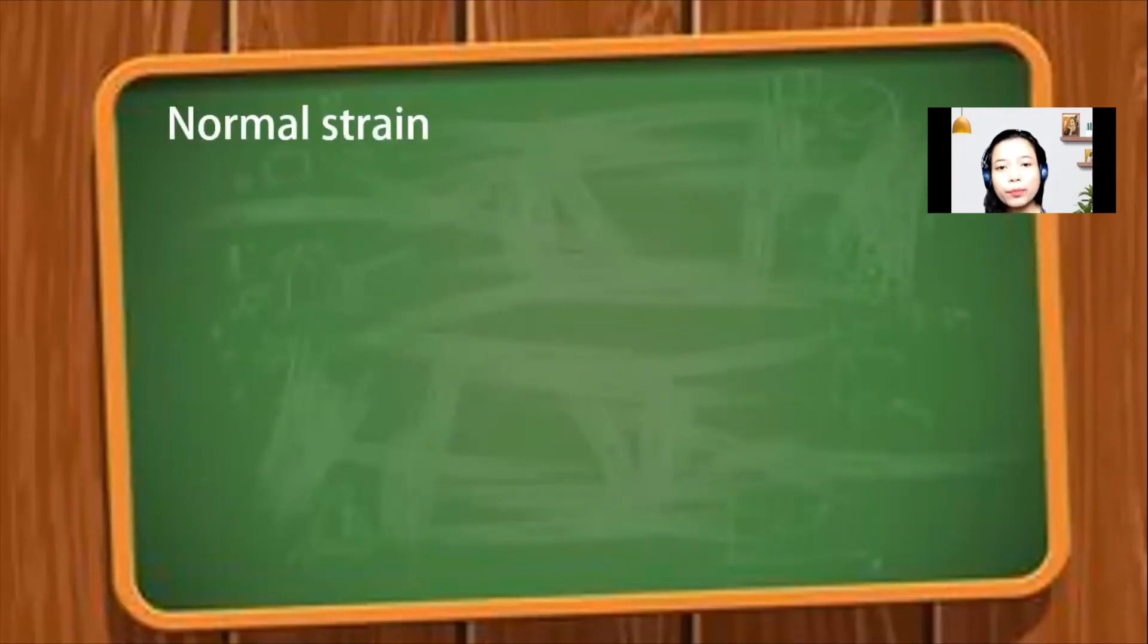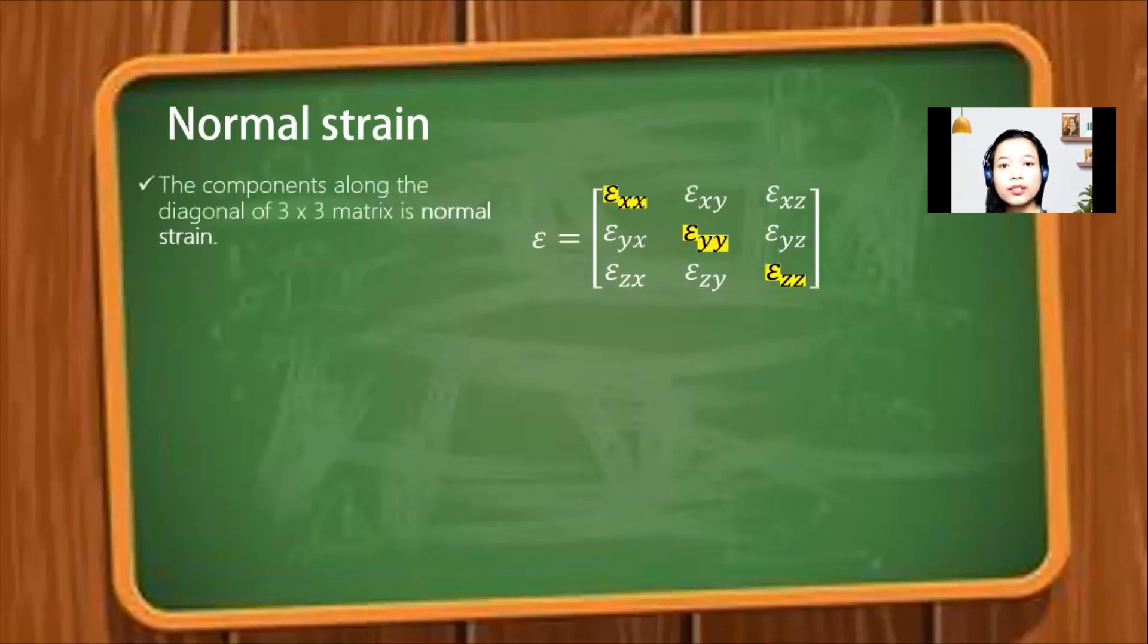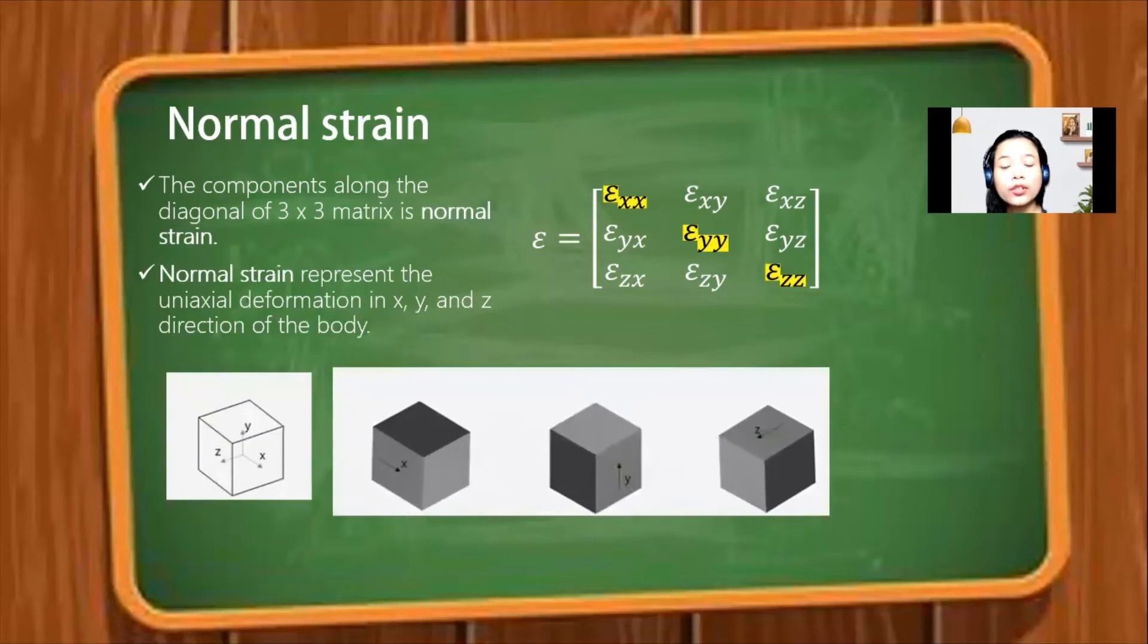In three-dimensional problems, the strain is represented by a three by three matrix. The diagonal terms of the matrix represent uniaxial deformation in x, y, and z directions of the body. This component of strain is called normal strain.